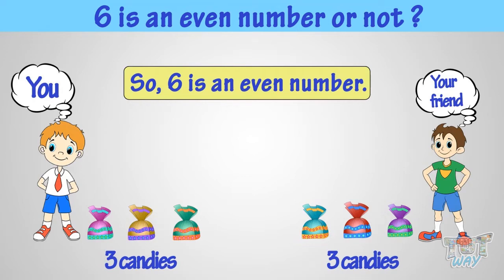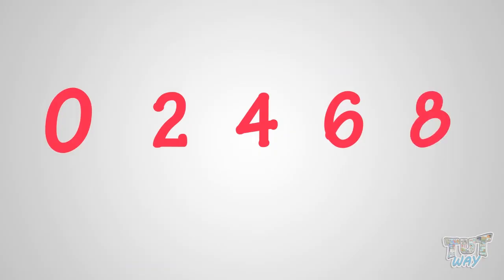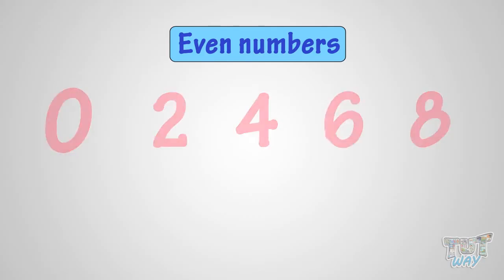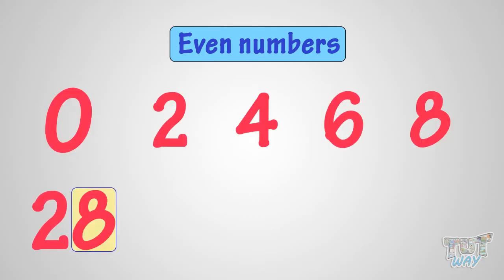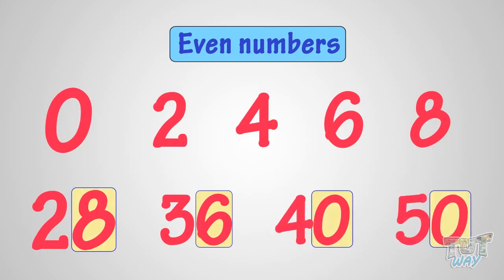Also, don't forget. 0, 2, 4, 6 and 8 are even numbers, and all the numbers ending with them, like 28, 36, 40, and 50, are even numbers.